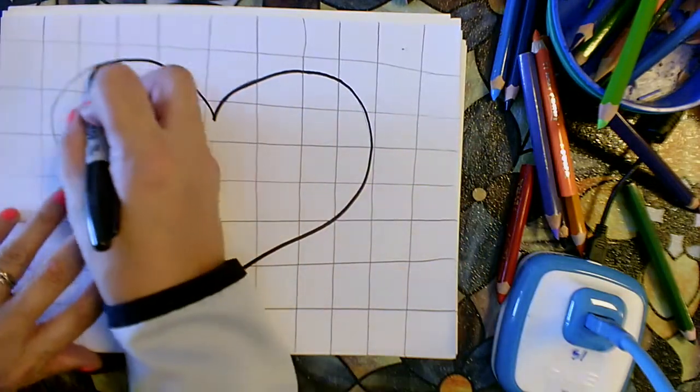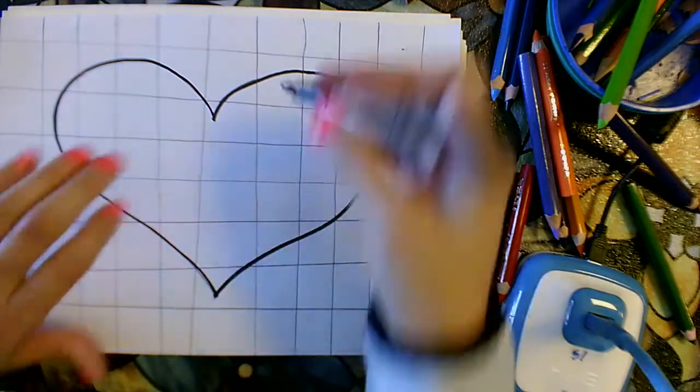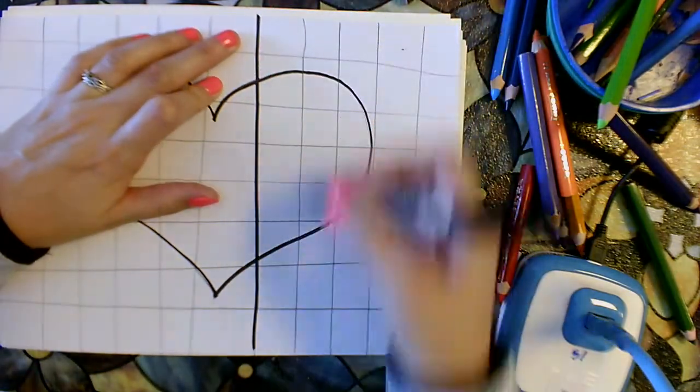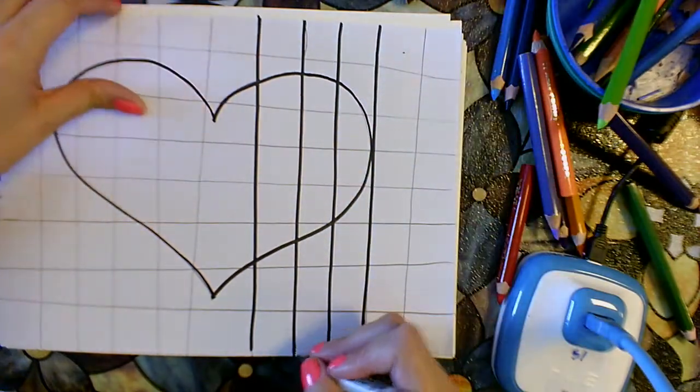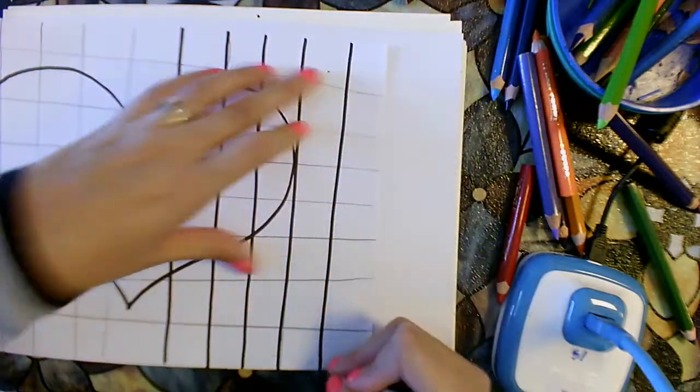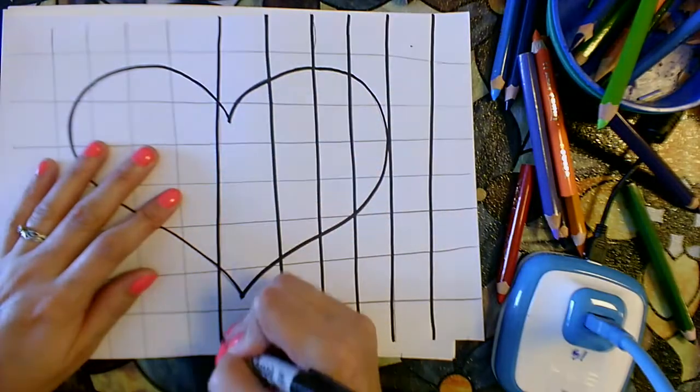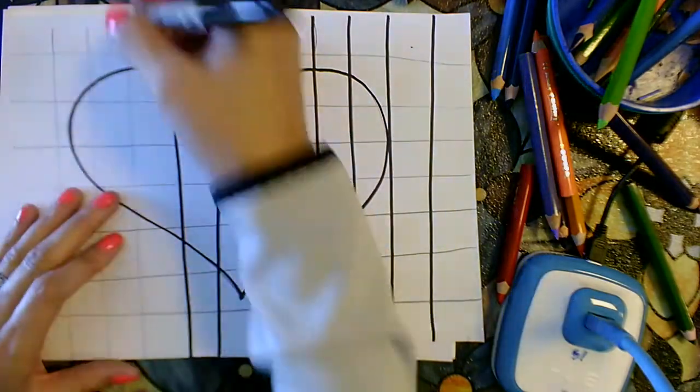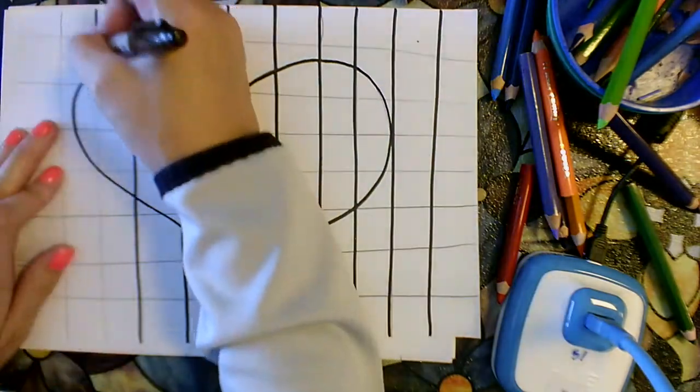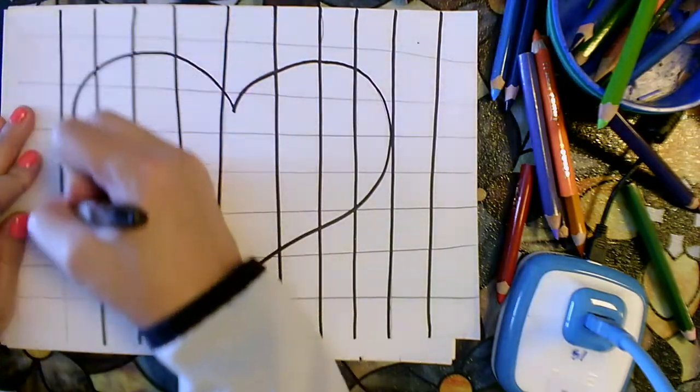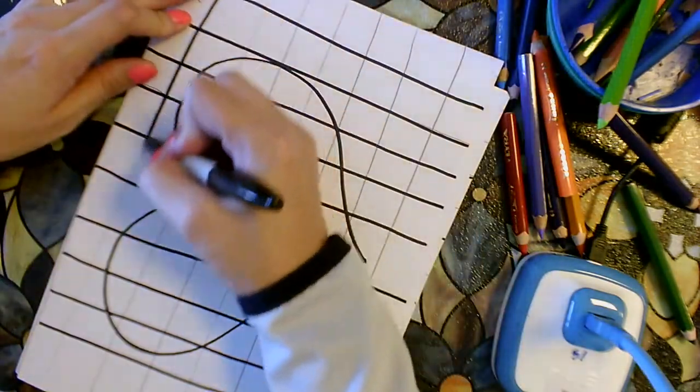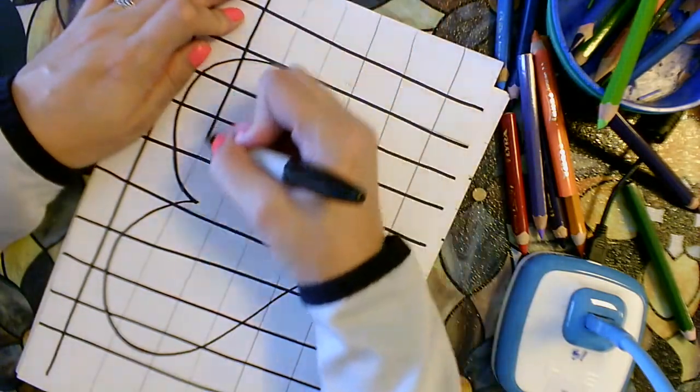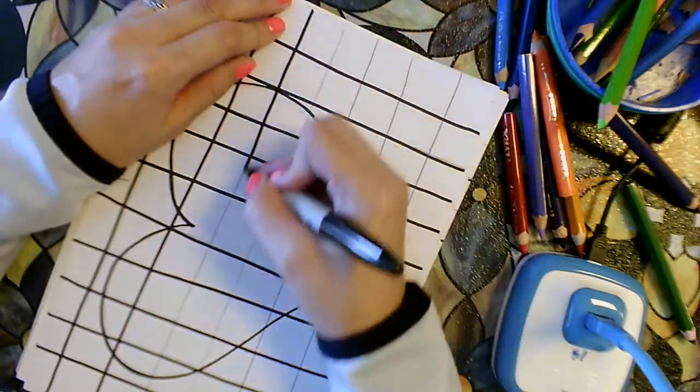When you're finished drawing all of those lines, then you will trace them with marker. So this gives us a kind of checkerboard or chessboard look, and it makes many little squares or rectangles on the paper, which we will then color in two colors inside of the heart and two colors outside of the heart.